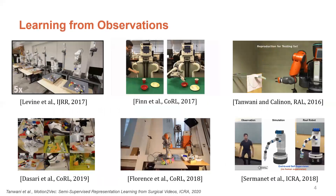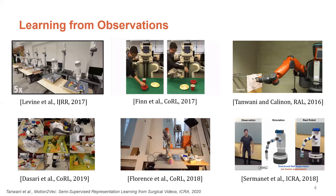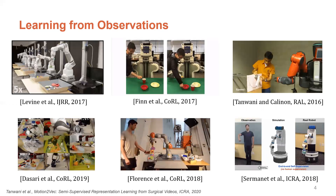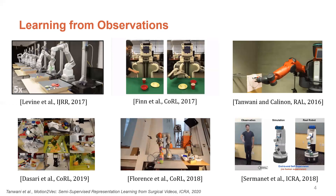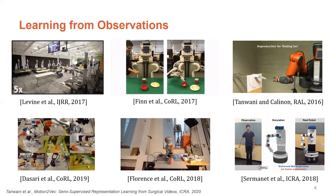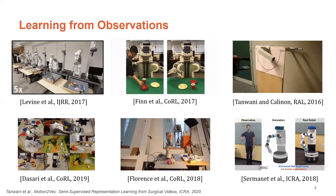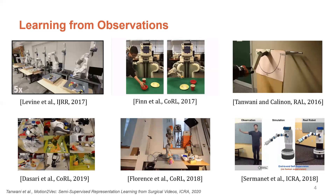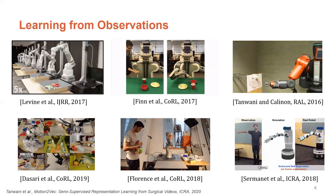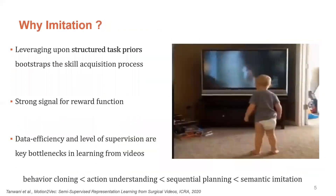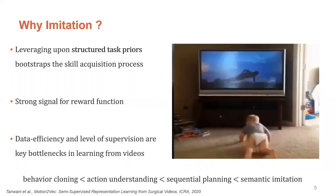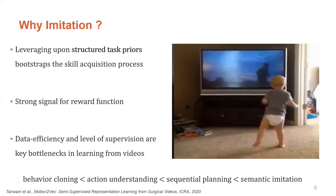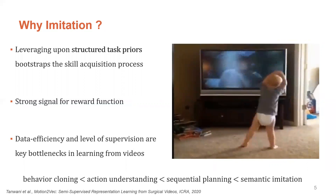Sample and time complexity of autonomous skill acquisition from visual observations can be rather high. Learning in simulation provides a feasible approach. However, real-world tasks such as surgical suturing can be hard to simulate with high fidelity. Self-supervised and meta-learning approaches are gaining popularity for skill acquisition in a more tractable manner, ranging from large-scale pre-trained models to pixel-wise dense correspondence methods to time contrasting networks. In this work, we leverage available suturing videos as structured task priors for imitation, which provide a strong signal as a reward function for imitation and further online improvement.